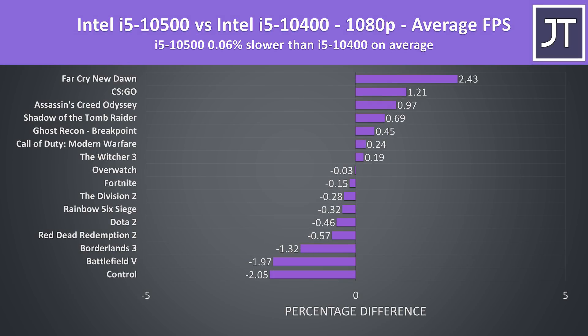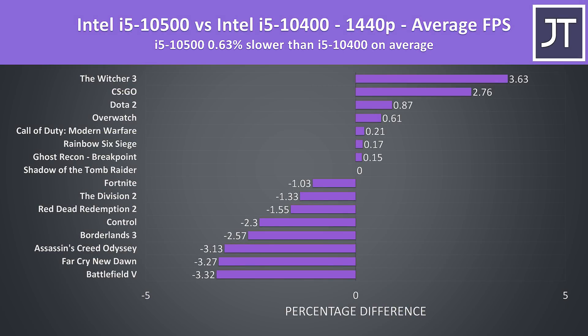On average over these 16 games tested, the more expensive i5-10500 was basically performing the same as the 10400 at 1080p once we average everything out. Even at worst or best case I was only seeing a 2% difference in performance, which isn't something you're going to be able to practically notice or benefit from. Interestingly, when we step up to 1440p where the processor typically matters less as the GPU takes on more of the work, the 10500 was actually a little slower on average.